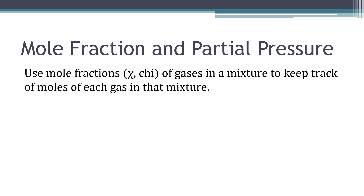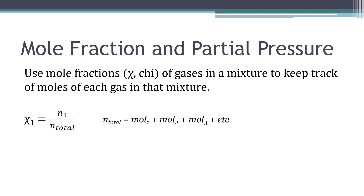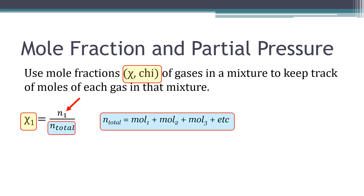We can use mole fractions of gases in a mixture to keep track of the moles of each gas in that mixture. The mole fraction is denoted by the Greek letter chi. In this example, the mole fraction of gas 1 is the moles of gas 1 divided by the total moles in the mixture.